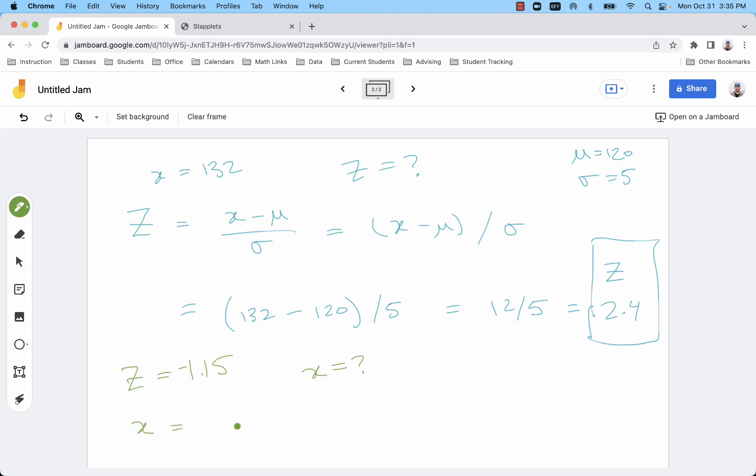Now I convert my Z. I had a Z of negative 1.15, and I want to know what's the X for that. The other formula that I can use is mu plus Z times sigma. And there, you just need to multiply first. So 120 plus negative 1.15 times 5. If I multiply first, that's negative 5.75.